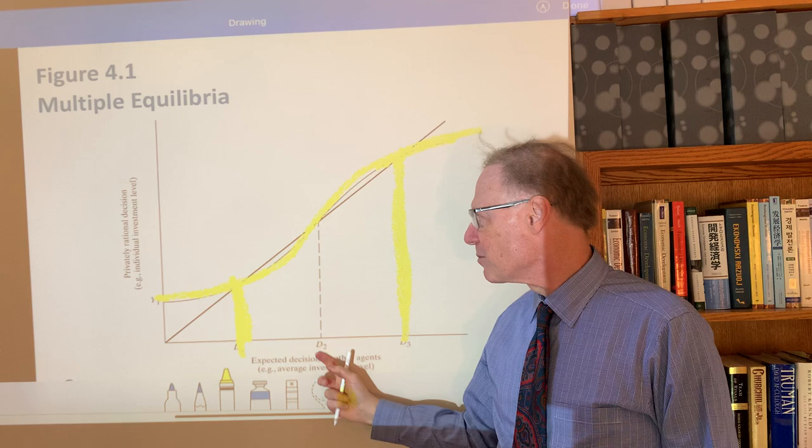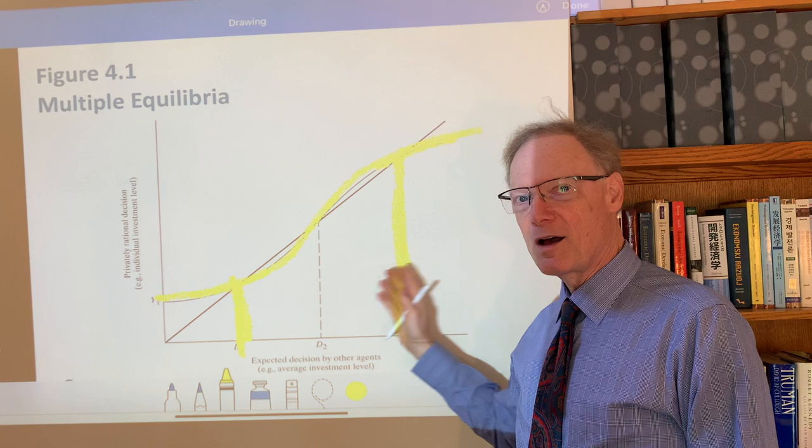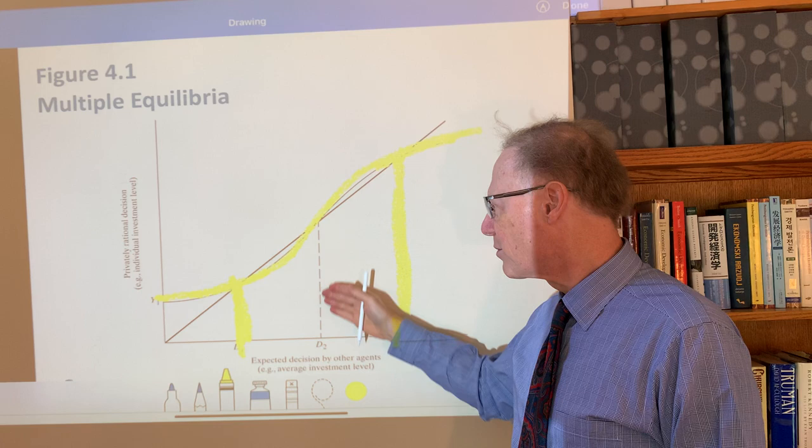So that this central possible equilibrium, D2, I think more of as an economic divide. It divides possibilities in the economy of going to the lower or the higher equilibrium.